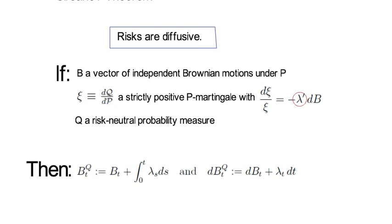meaning a vector of independent risk-neutral Brownian motions, is defined to be B_t, which are the physical Brownian motions, plus the integral from 0 to t λ_s ds. Or in differential form it says that dB_t^Q is defined to be dB_t plus λ_t dt.